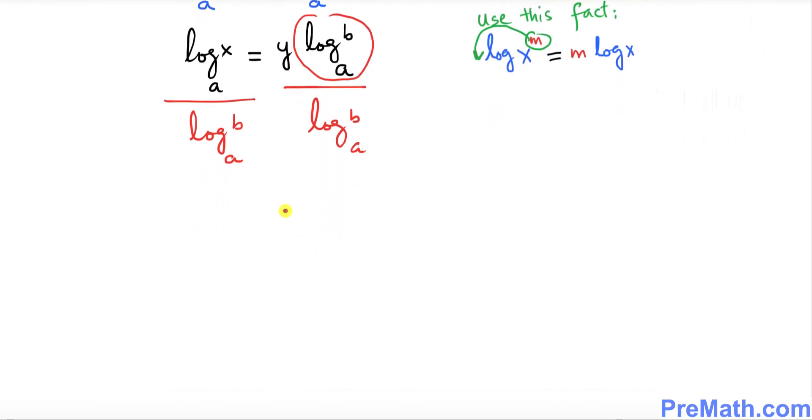Now the next thing I want you to do is go ahead - this cancels out with this one. So we simply ended up with log of x with a base a over log of b with a base a equals to y. I want you to call this equation number two.